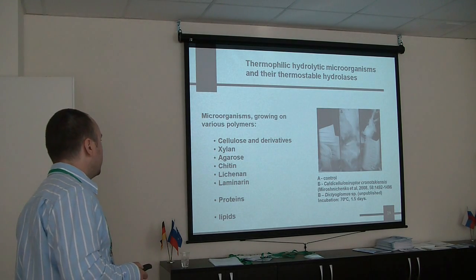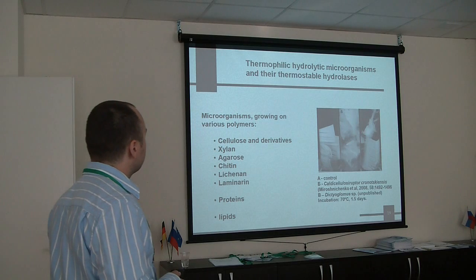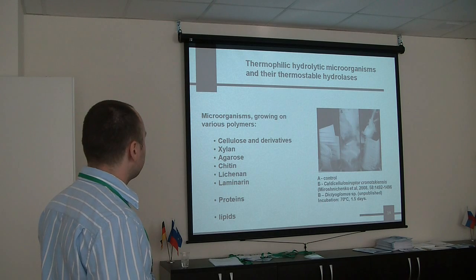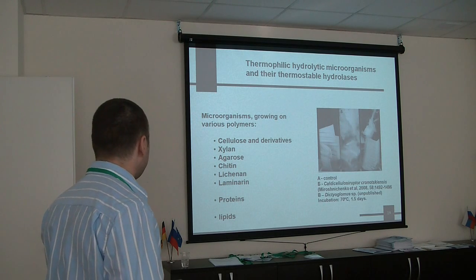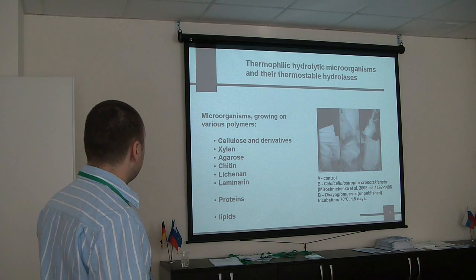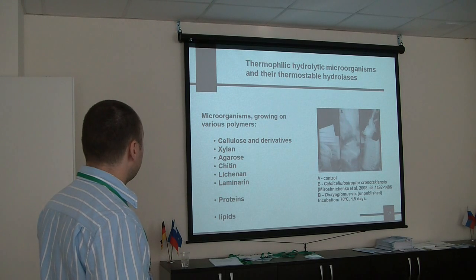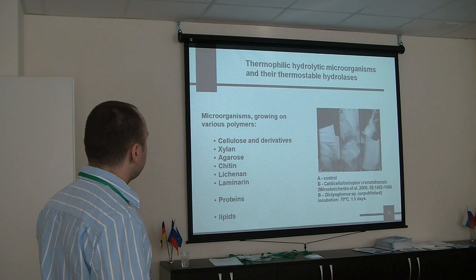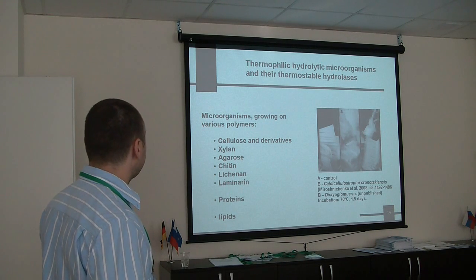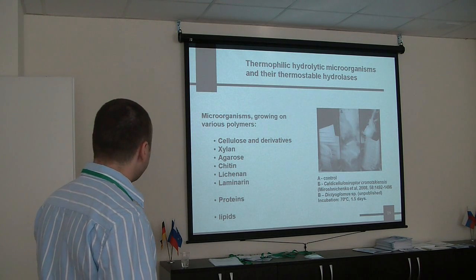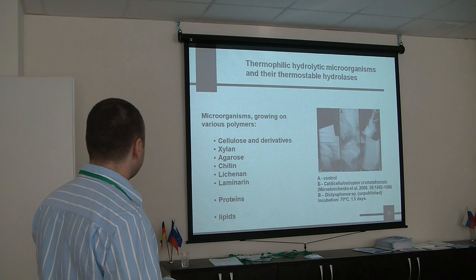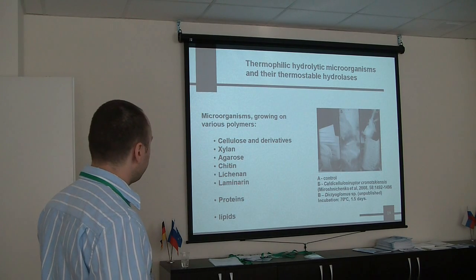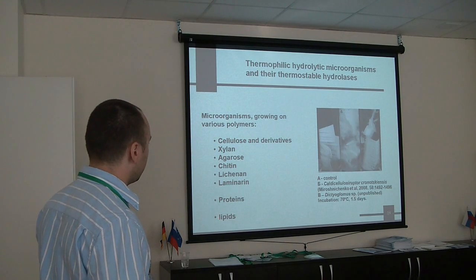The last group I wanted to speak about today is thermophilic hydrolytic microorganisms and their thermostable hydrolases. Thermophilic hydrolytic microorganisms means these organisms are able to grow on different polymers: carbohydrates like cellulose, xylan, agarose, chitin, laminarin, as well as proteins and lipids.